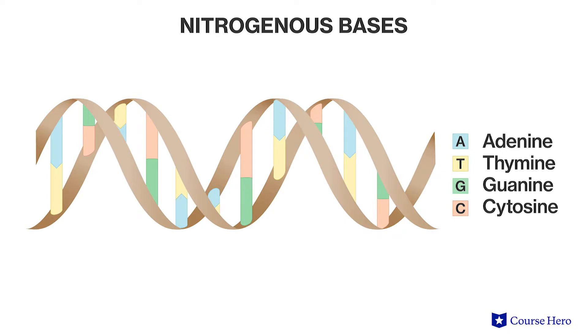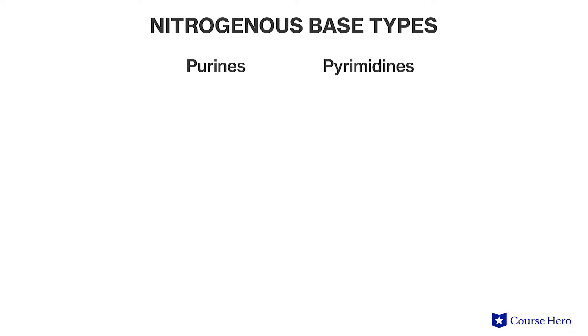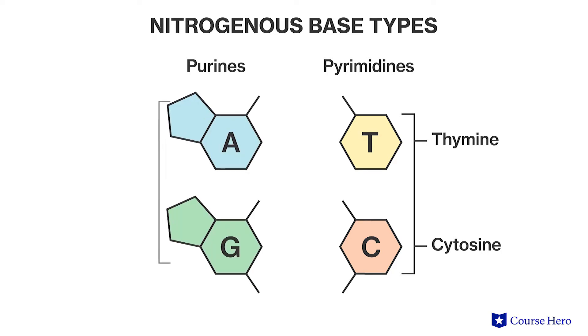The complementary base pairs are adenine and thymine, and guanine and cytosine. The four nitrogenous bases can be divided into two types: purines and pyrimidines. Thymine and cytosine are pyrimidines, meaning they consist of single-ringed structures, and adenine and guanine are purines, meaning they consist of double-ringed structures.